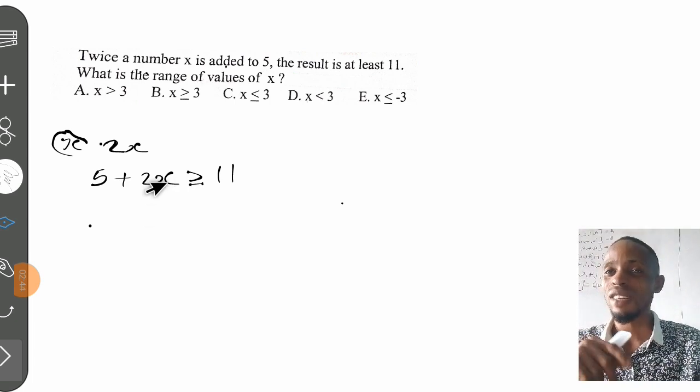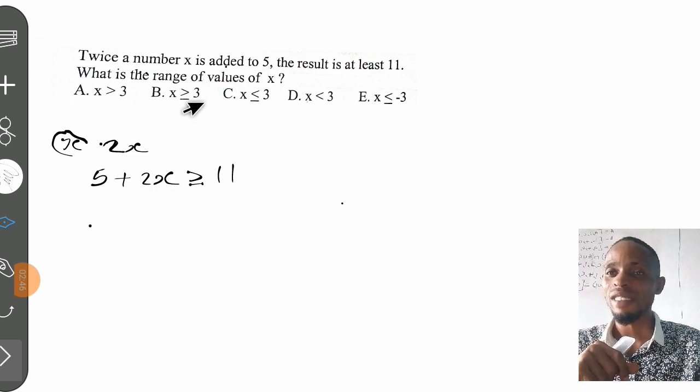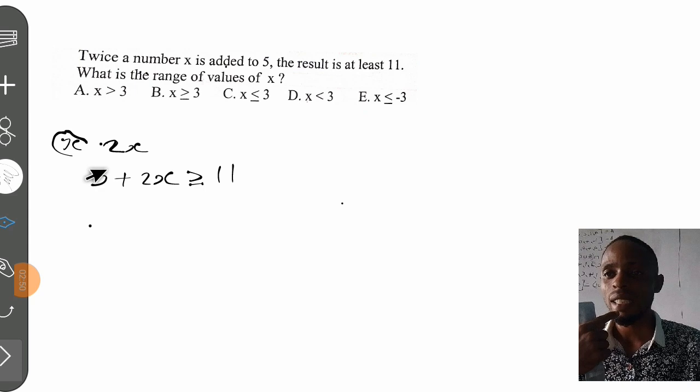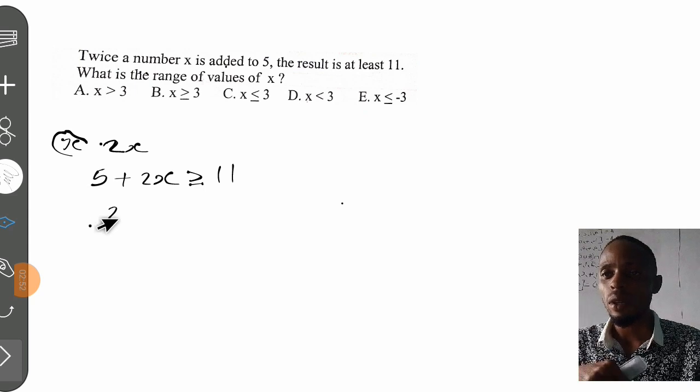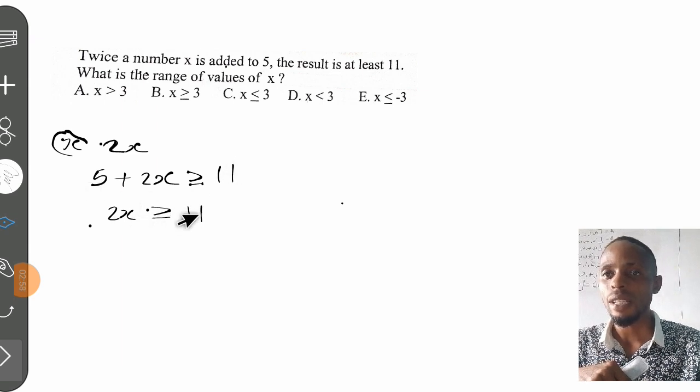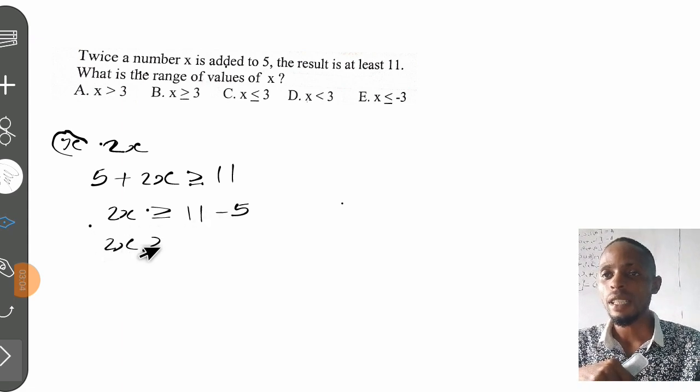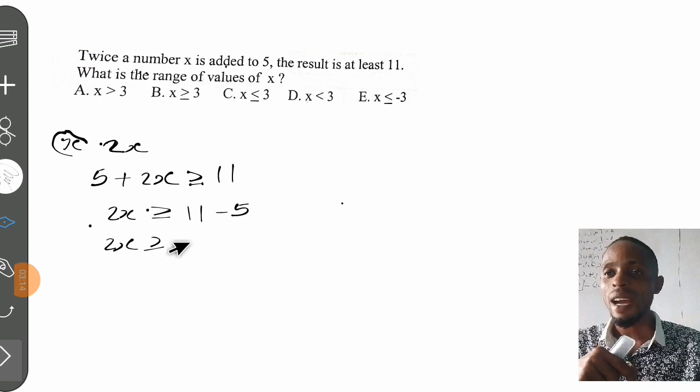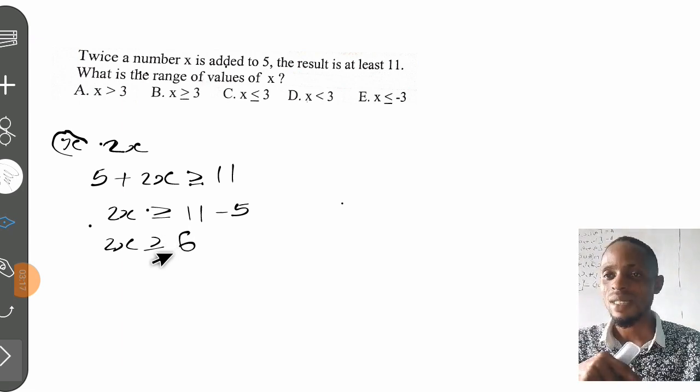Let's solve it now. I want to find the range of x. We collect like terms. We have 2x ≥ 11. Take 5 to the other side, which gives us minus 5. So we have 2x ≥ 11 - 5, which gives us 6.